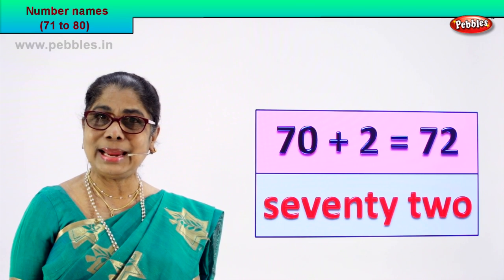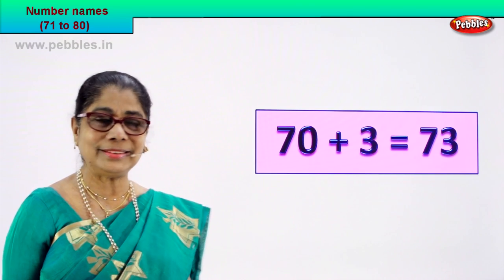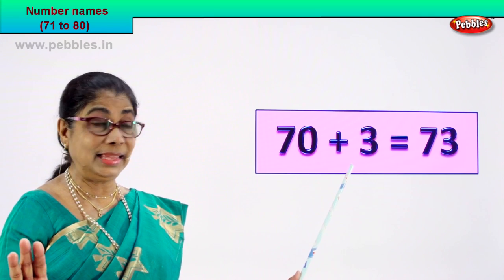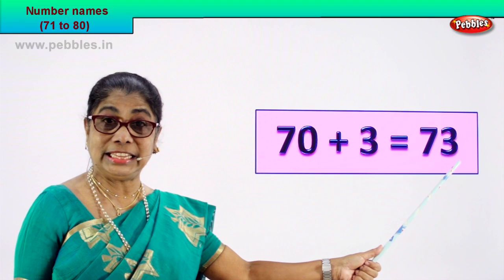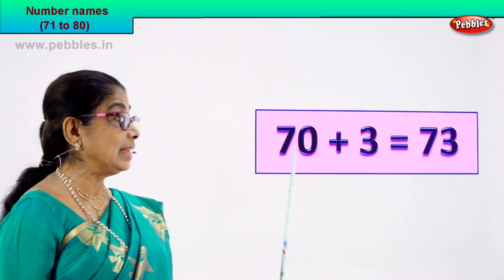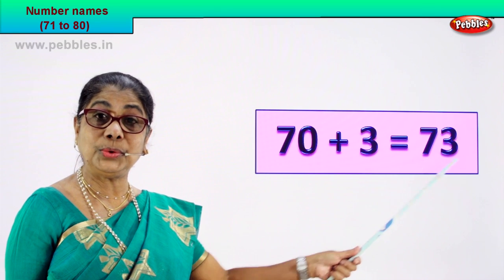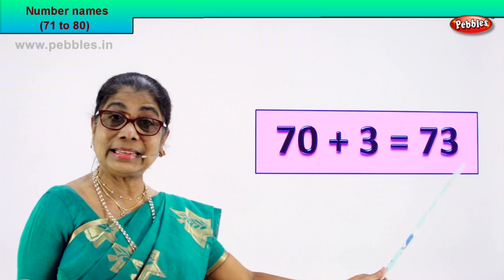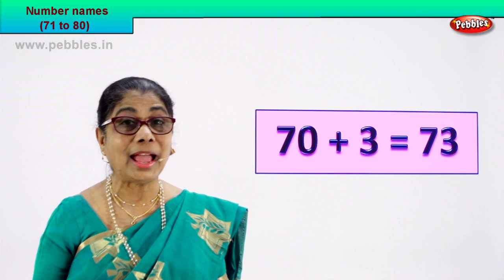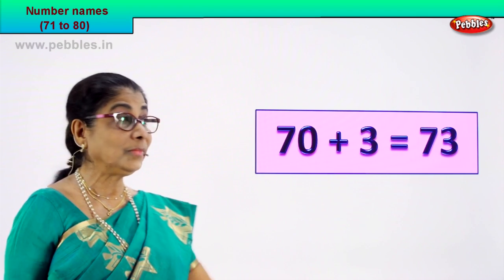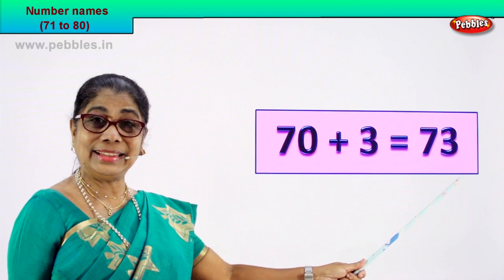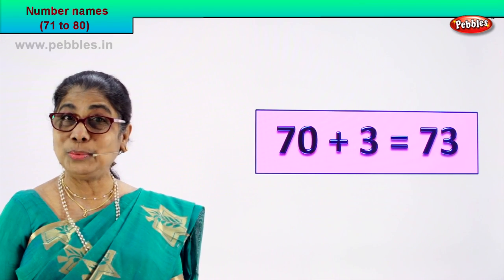70 plus 3 is equal to 73. 7 and 3 — 73 is the numeral. How do we write its name? You know how to spell 70, you know how to spell 3, and then you get the spelling of the numeral 73.